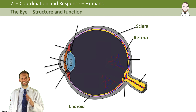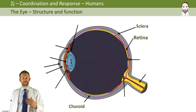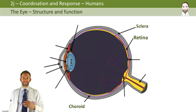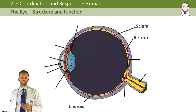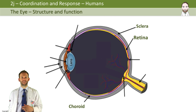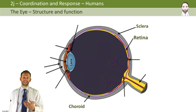The retina is where the light-sensitive cells are. We call them rods and cones. This is where you detect the light — this is where the receptors are — and all that information is then passed down the optic nerve to the brain, where you can interpret what you're seeing.